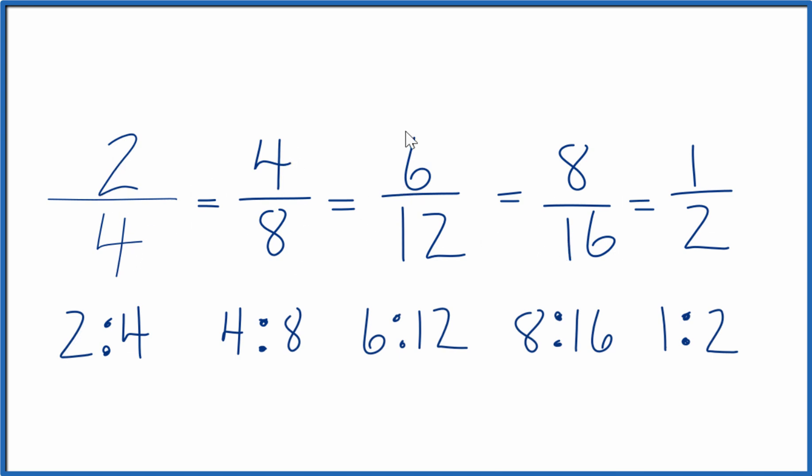Divide 2 by 4, 4 by 8, 6 by 12, 8 by 16, or 1 by 2. You'll get the same value, 0.5. They're all equivalent.